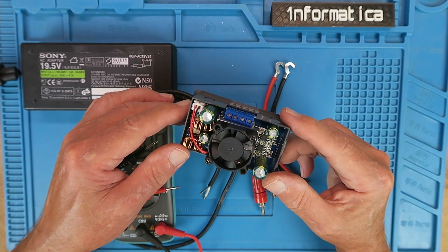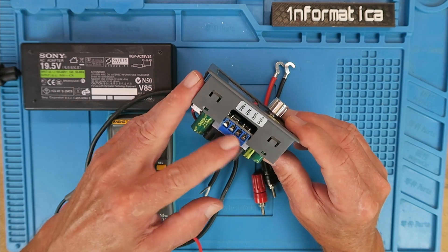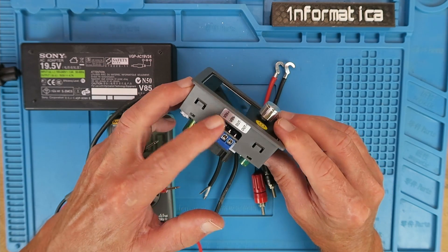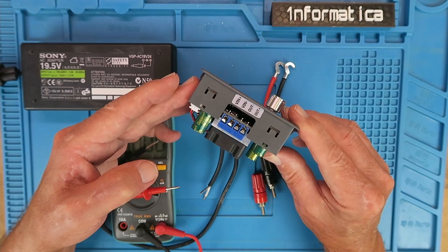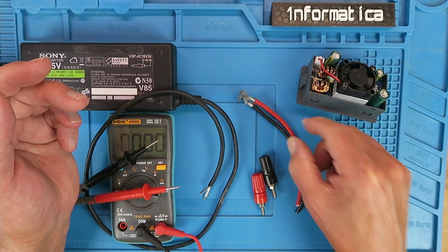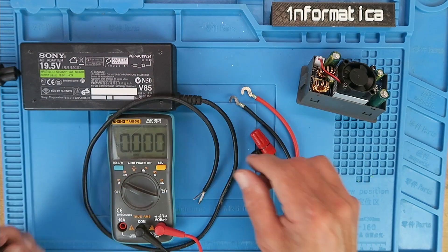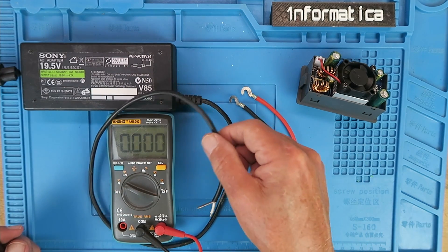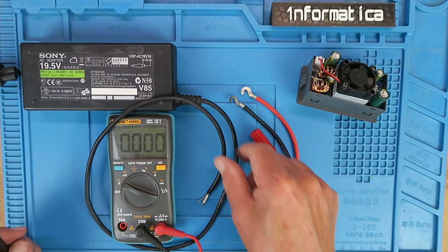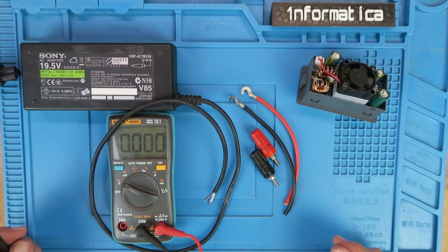Things couldn't really get much simpler than this module. Just the four connections: the voltage in and the voltage out. Made up a couple of leads. I have some suitable binding posts. I've cut down the lead on the power supply to a manageable length. That's more than enough for my desktop area.